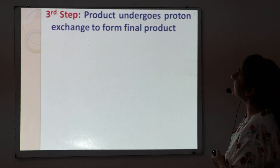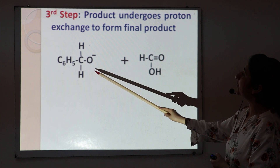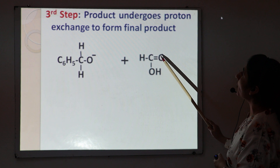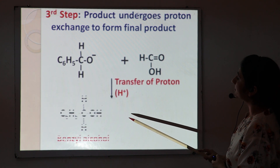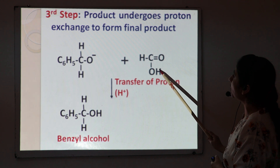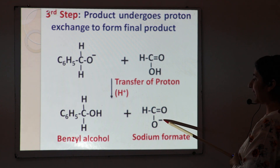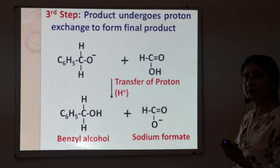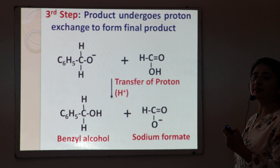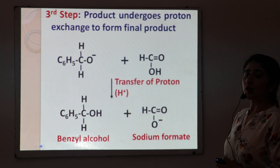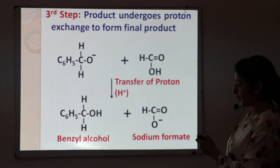In the third step, the products from the second step undergo proton exchange to form the final products. There is a transfer of a proton from the formic acid to the anion. As a result, two products are obtained: the anion is converted into benzyl alcohol, and the second product is the formate ion. Because this reaction takes place in the presence of sodium hydroxide, the sodium ion combines with the formate ion to form sodium formate. These are the three steps of the Cross Cannizzaro reaction: steps one, two, and three.